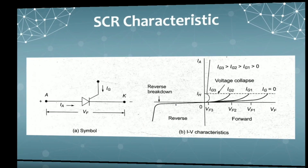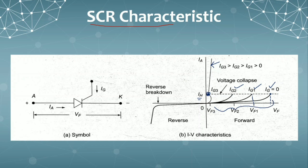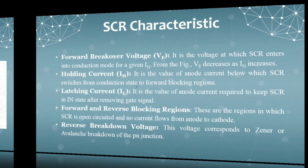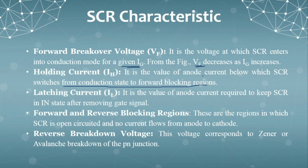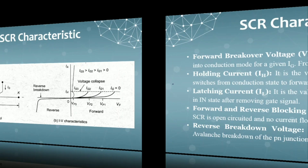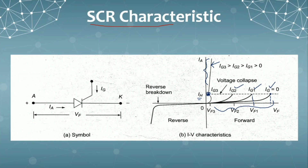We have three different regions of operation. The first region is forward blocking mode and this is the forward conduction mode. Holding current: it is the value of anode current below which the SCR switches from conduction state to forward blocking region. When the value of anode current Ia is below Ih, it reaches the blocking region from the conduction region. It will reach from conduction to blocking region when Ia falls below the Ih value.